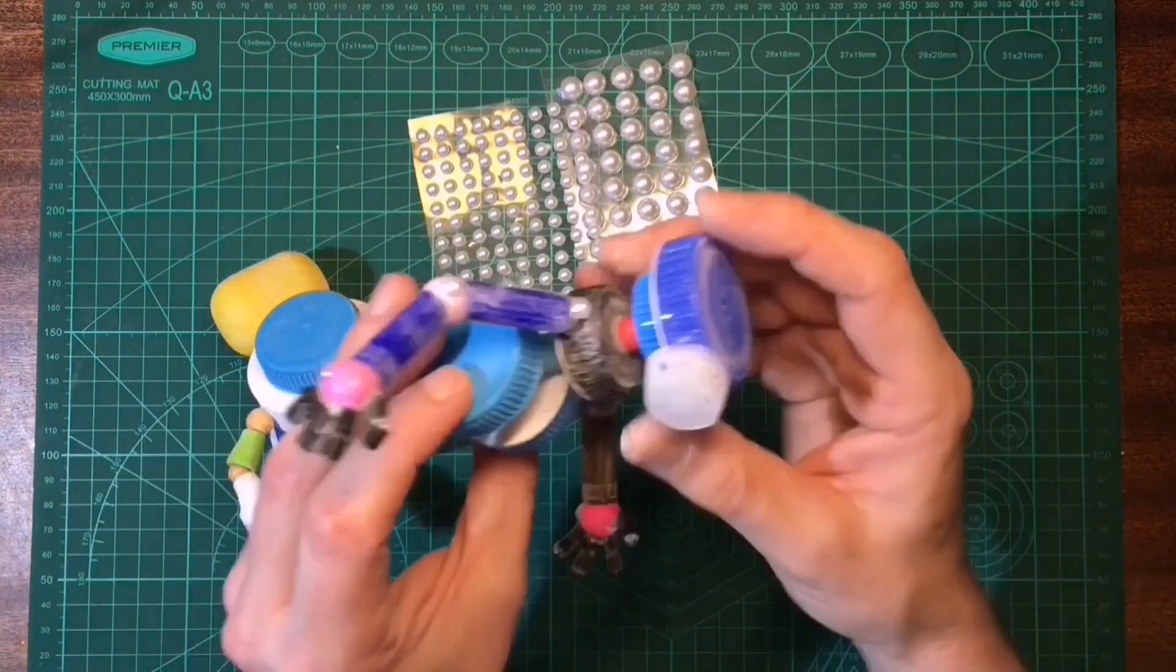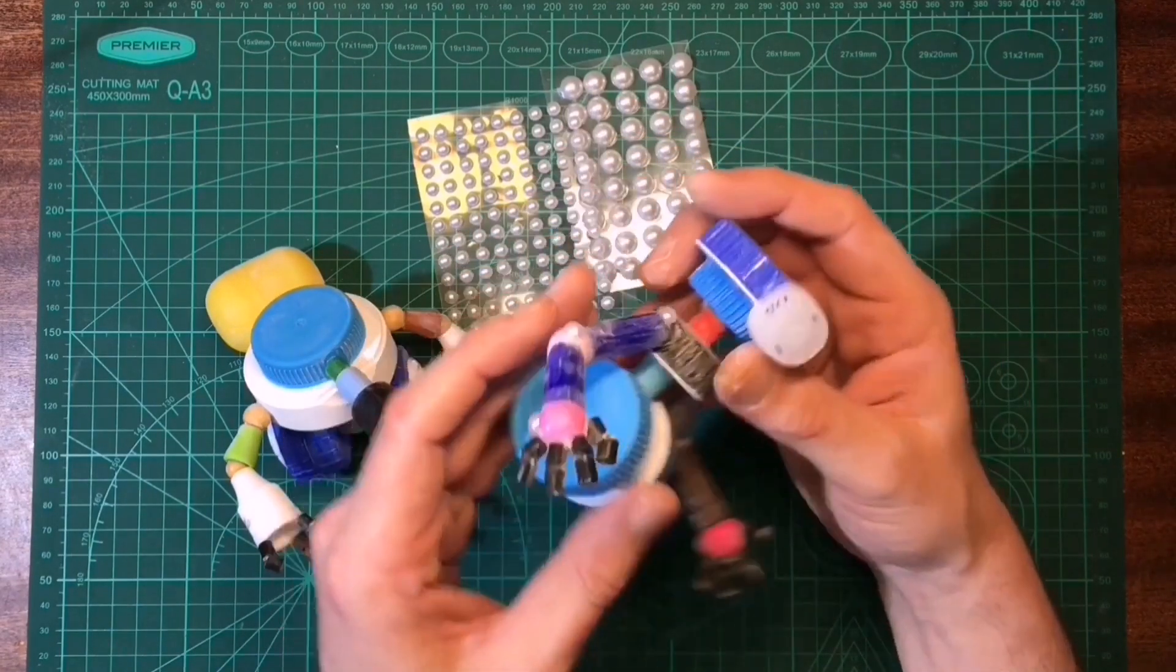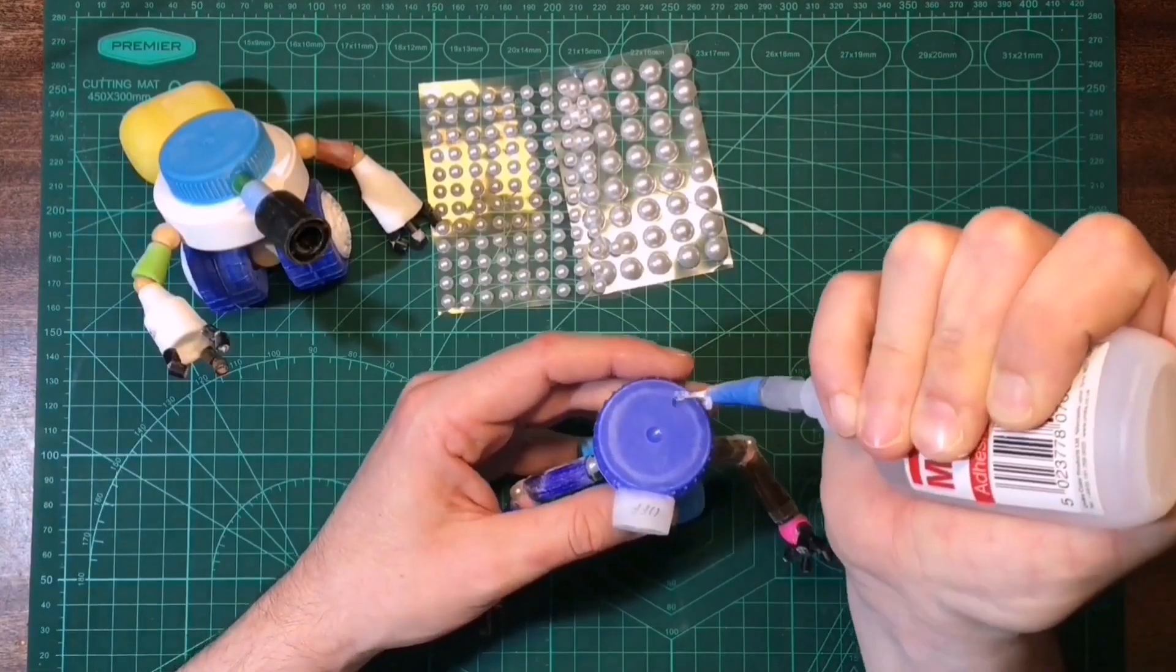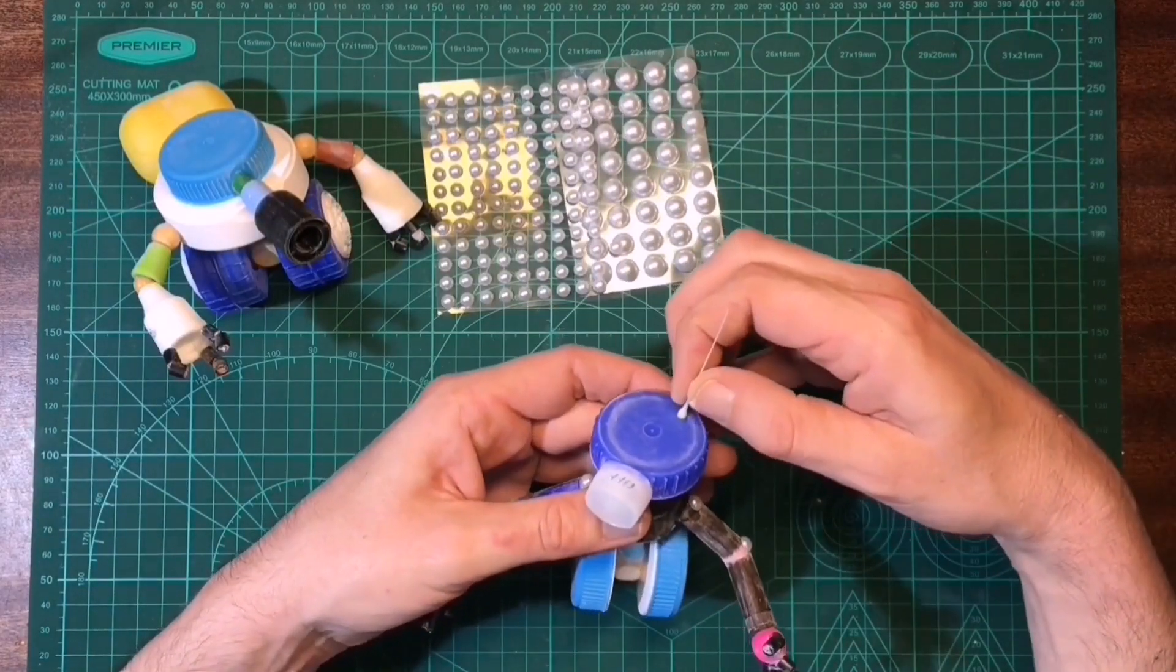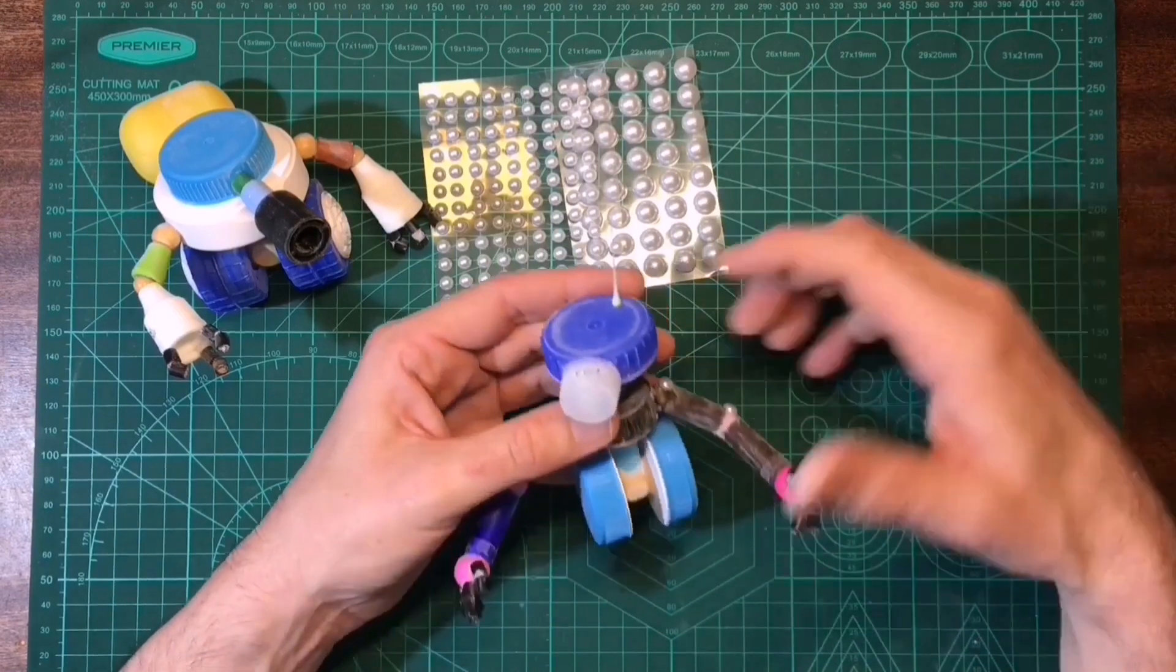And I just did the sprue trick with this. I just heated the sprue up with a lighter and just stretched it out. Again I did that in a previous video, I'll maybe leave a wee link for it in the description. But yep, just get that in. Perfect wee aerial.